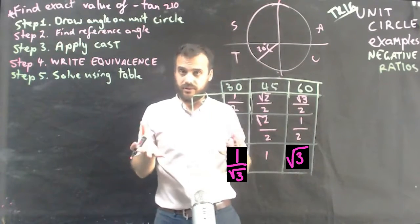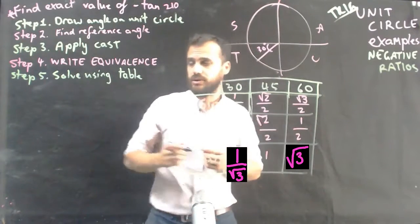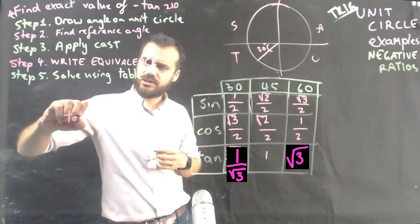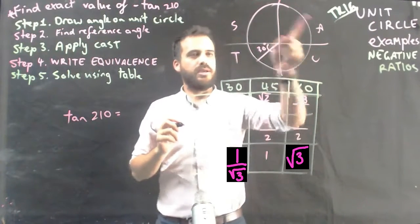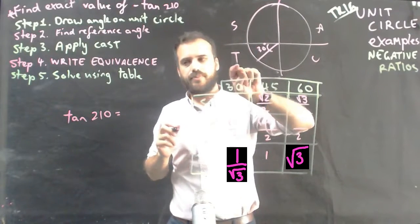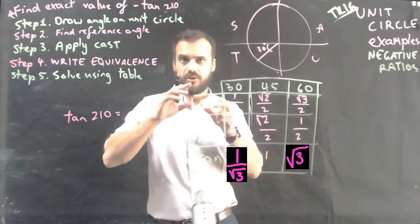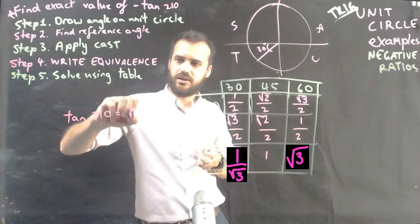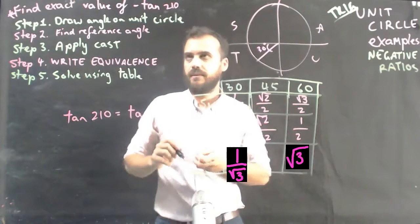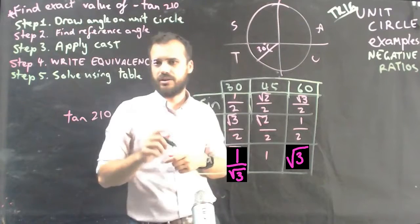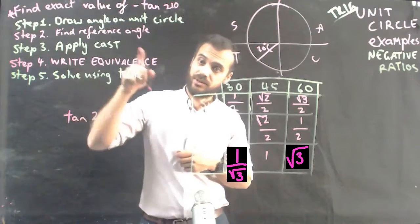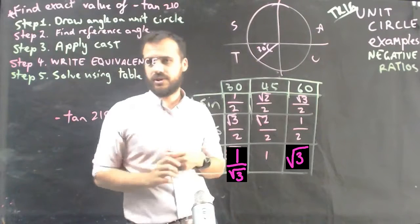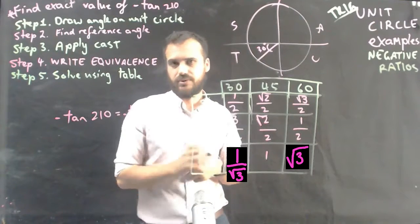Now, this is sort of where you need to start thinking about this, writing the equivalents. Now, if the question was tan 210, we're in the tan quadrant. So, that's going to be positive tan 30. But the question wasn't tan 210. The question was negative tan 210. So, if tan 210 is equal to tan 30, then negative tan 210 must be equal to negative tan 30.